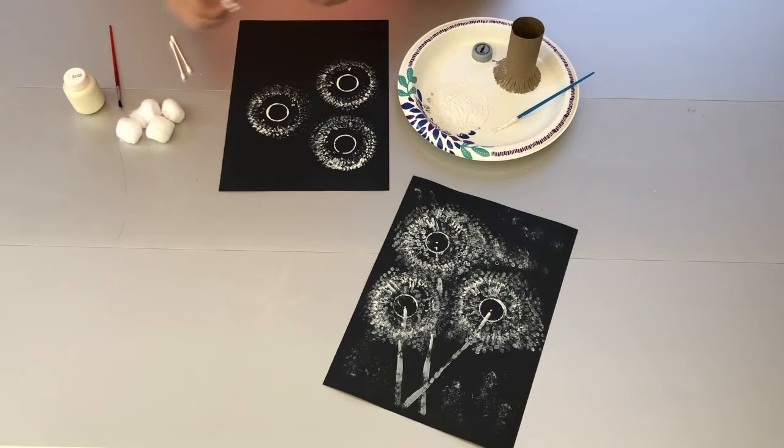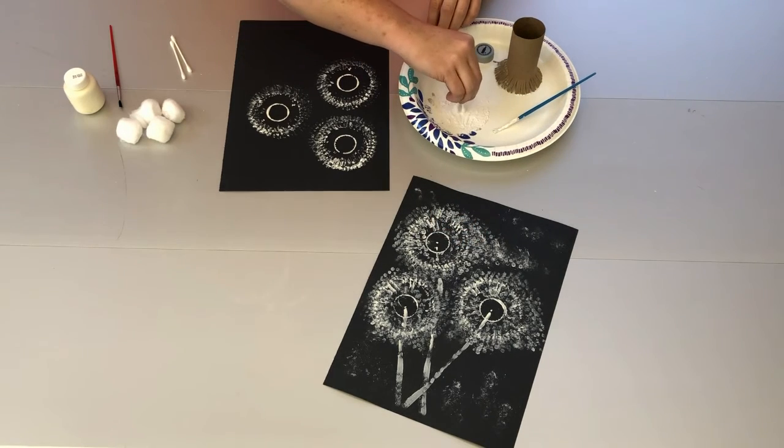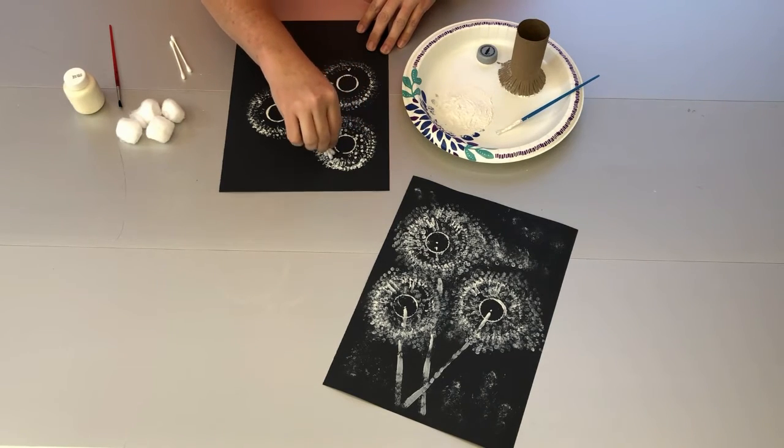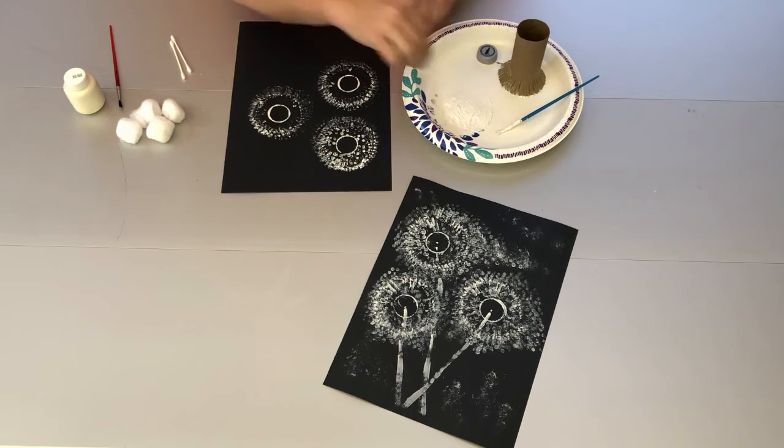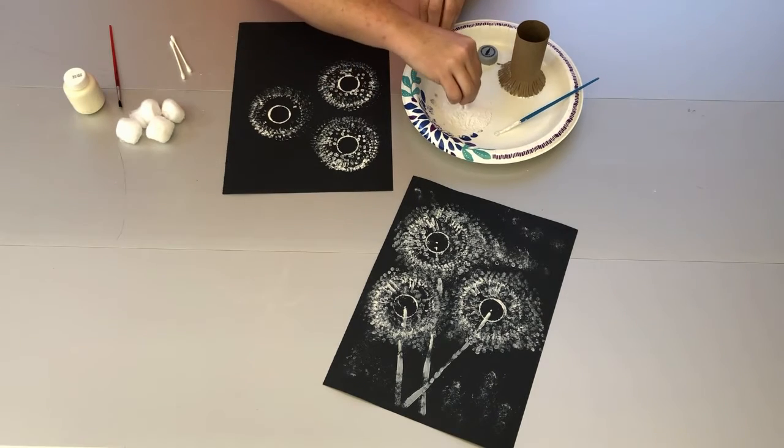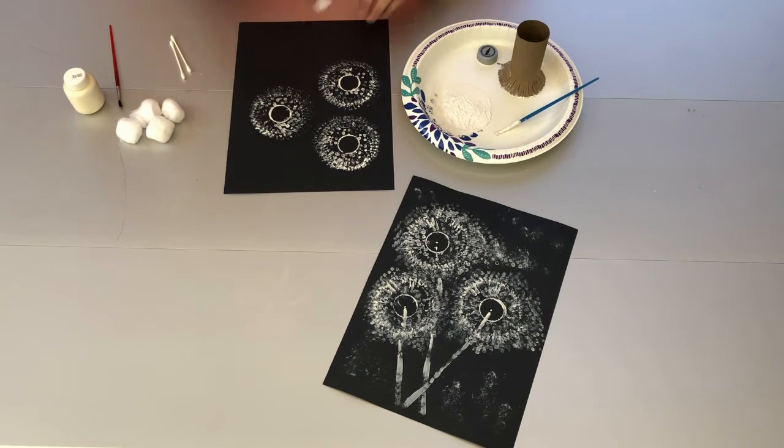And then we're gonna take our q-tips and you can take as many as you want. And you'll bunch it together and we're gonna make the little dots that go on the inside of the dandelion. So again, just tap it into your paint and dab it around. And you can make as many little dots as you'd like. Every dandelion is different.